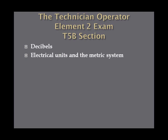The T5B section questions cover decibels and electrical units and the metric system. It's important to note that you are allowed to take a calculator to the exam. The volunteer examiner may ask you to erase the memory so you haven't stored any formulas you're supposed to memorize. However, the calculator is key, and I would recommend getting a good one.